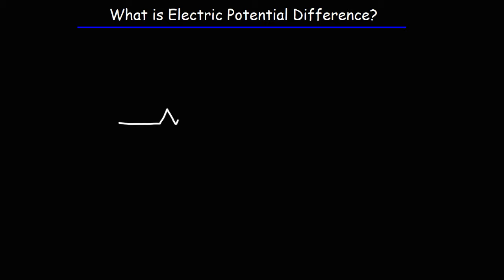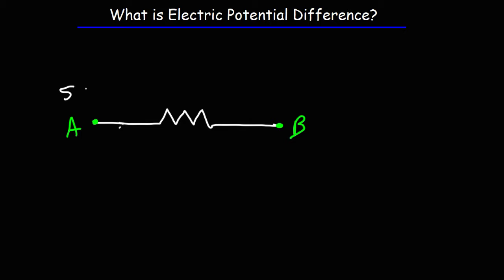So let's start with a resistor. Let's call this point A and this is going to be point B. Let's say that the electric potential at point A is 50 volts and the electric potential at point B is 20 volts. And we're going to say that the resistor has a value of 5 ohms.